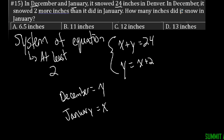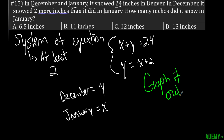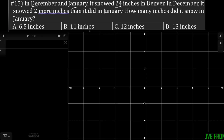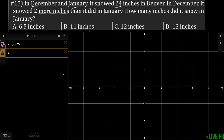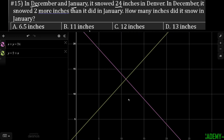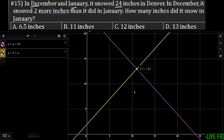It's asking how much did it snow in January. Anytime you have the equation, always graph it out. So let me pull up Desmos. I'm going to graph my system of equations because I have to graph both of them. My first equation was x plus y equals 24, and my second equation is y equals 2 plus x. So I have to find where those two lines intersect.